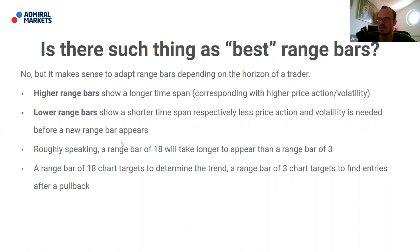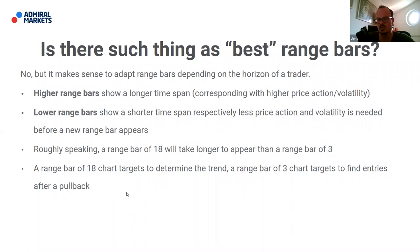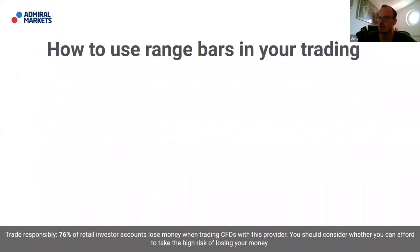Roughly speaking, a range bar of 18 will take longer to appear than a range bar of 3. A higher range bar — say 18 — is used to determine the overall trend, while a lower range bar — say 3 — is better for timing entries, for example after a pullback. We'll combine both of these approaches in the trading strategy coming up shortly.